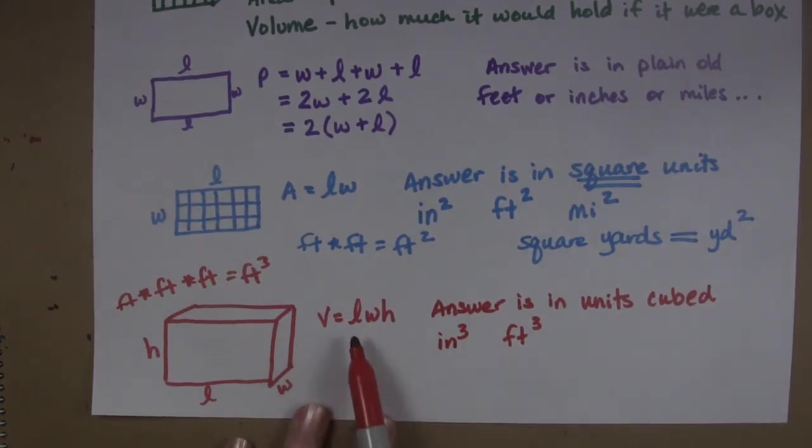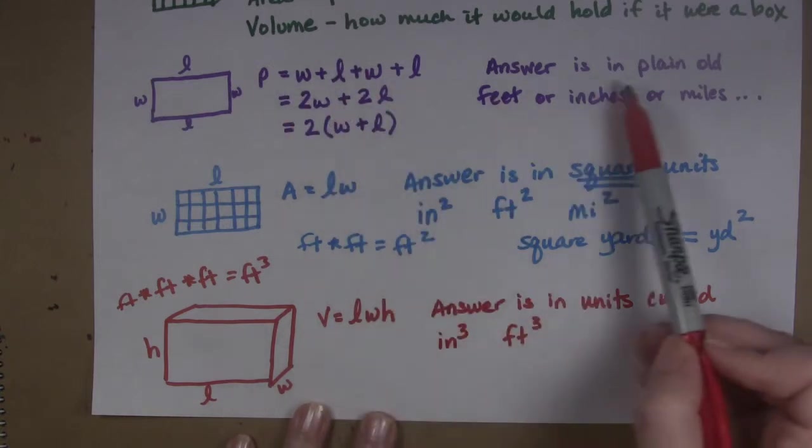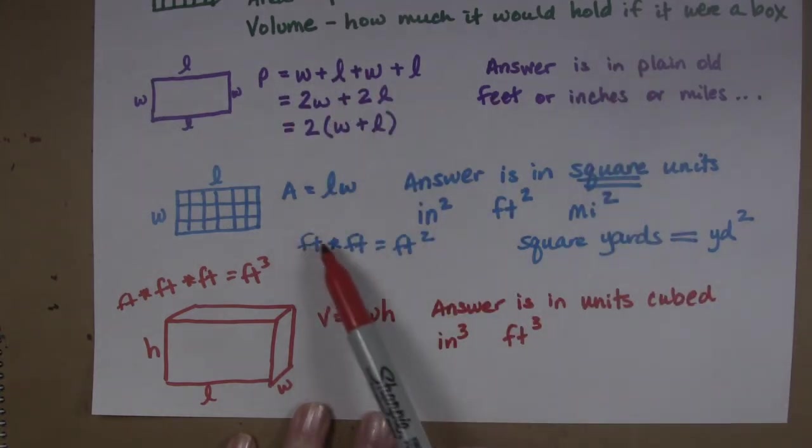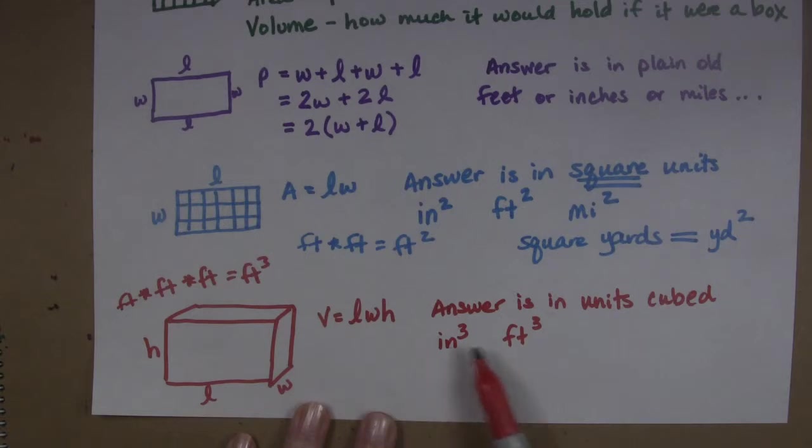That's always the case because you're multiplying these three different terms together. So here we multiply none, right? We're only adding. Here we multiply none so we don't have any exponents. Here we're multiplying two things so all of our exponents are to the two. And here we're multiplying three things so all of our exponents are three.